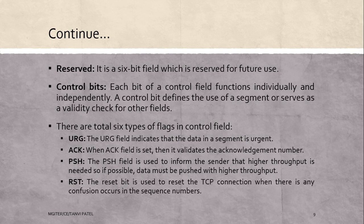Next is the reserved field. It is a 6-bit field which is reserved for future use. Next is control bits. Each bit of the control field functions individually and independently. A control bit defines the use of a segment or serves as a validity check for other fields. There are a total of six flags in the control bit field.